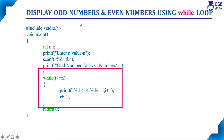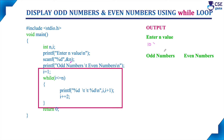So in this example, first we need to enter n value. Suppose n value we have entered as 10. Up to this 10 number, we need to display the odd numbers and even numbers. Using the printf statement, display the message odd numbers and even numbers. Up to this n value, we need to display odd numbers separately and even numbers separately.